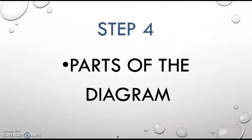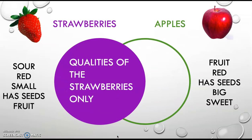Step four, we're gonna see the parts of the diagram. On the purple circle, you're gonna write only qualities of the strawberries only.